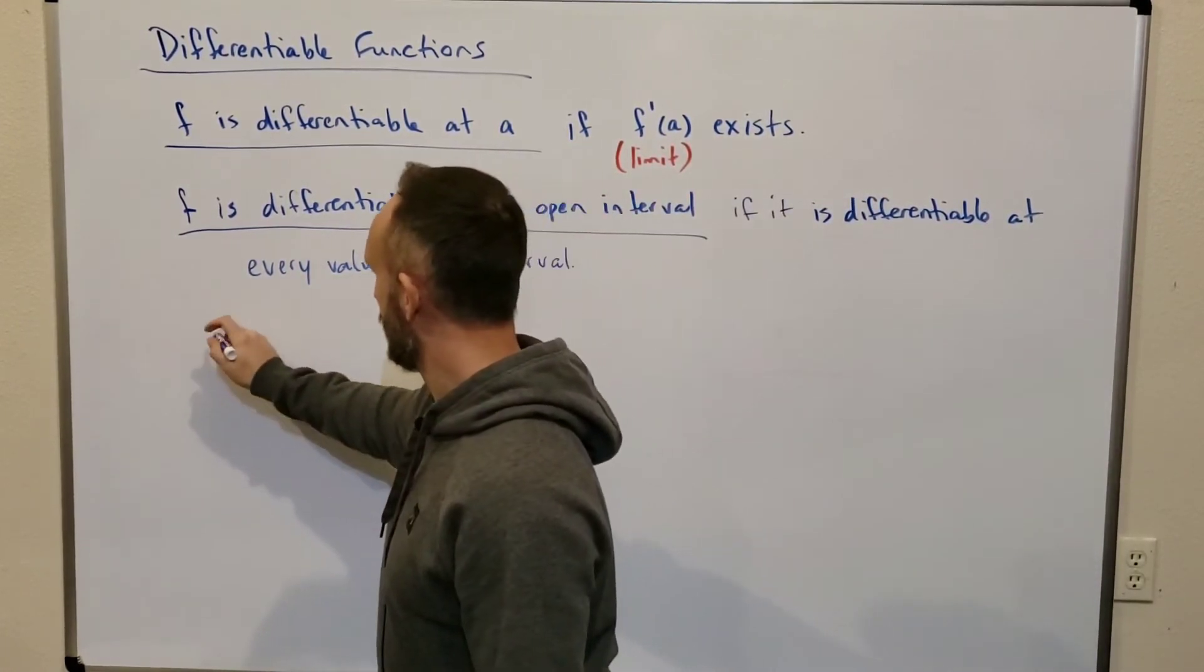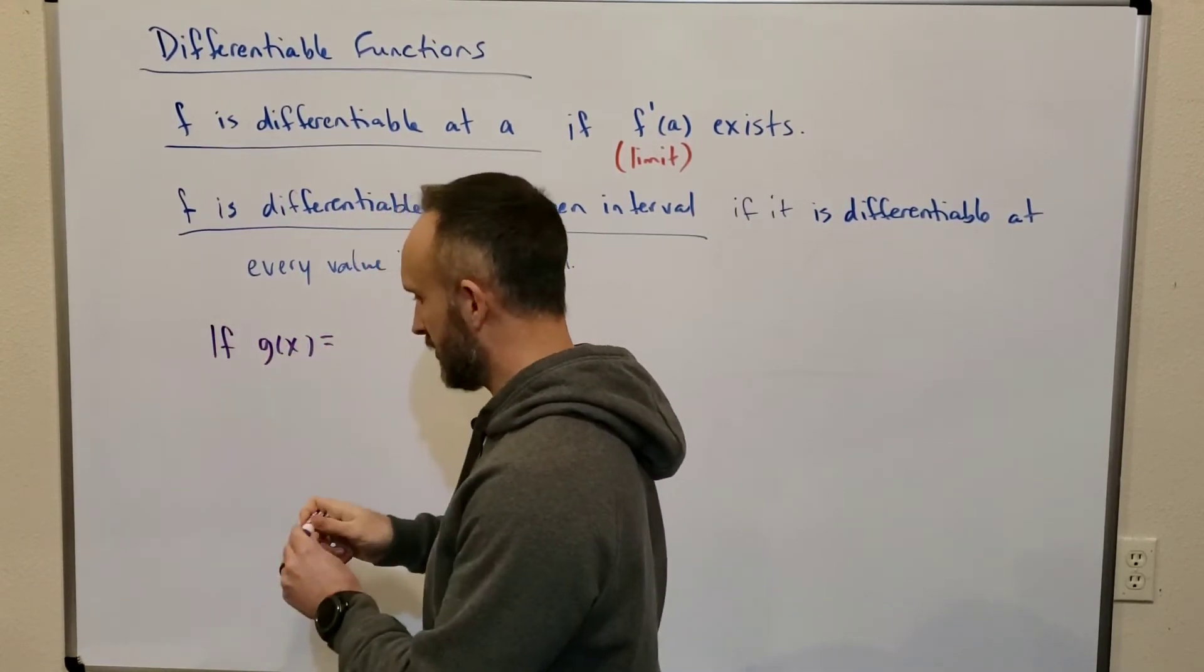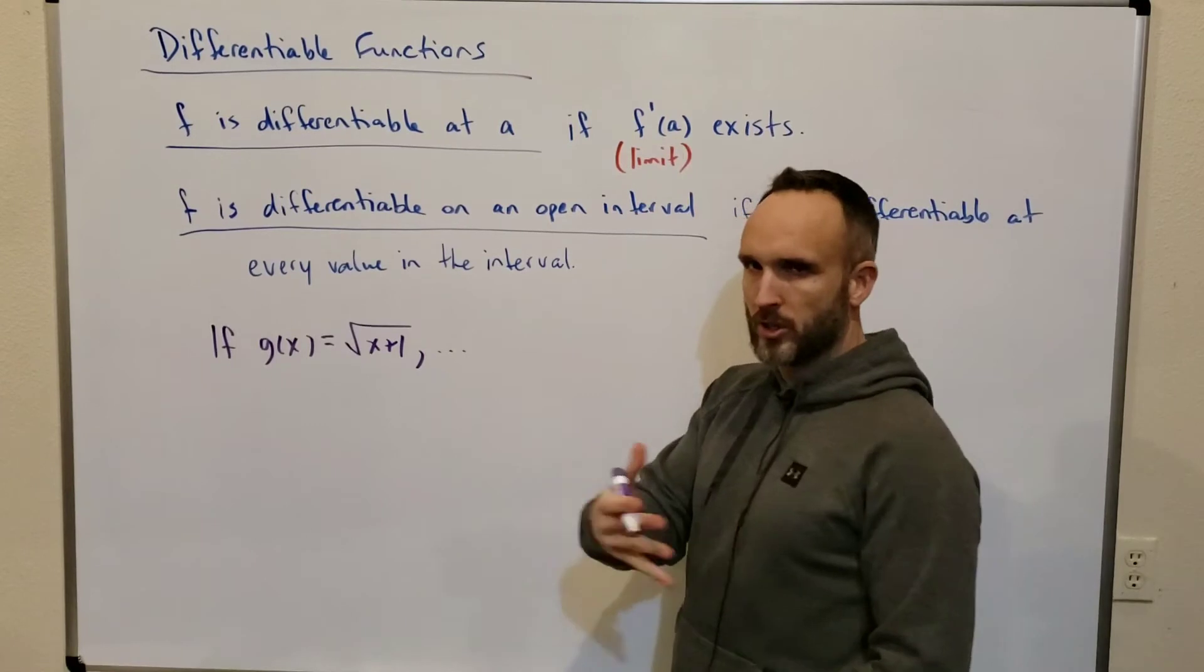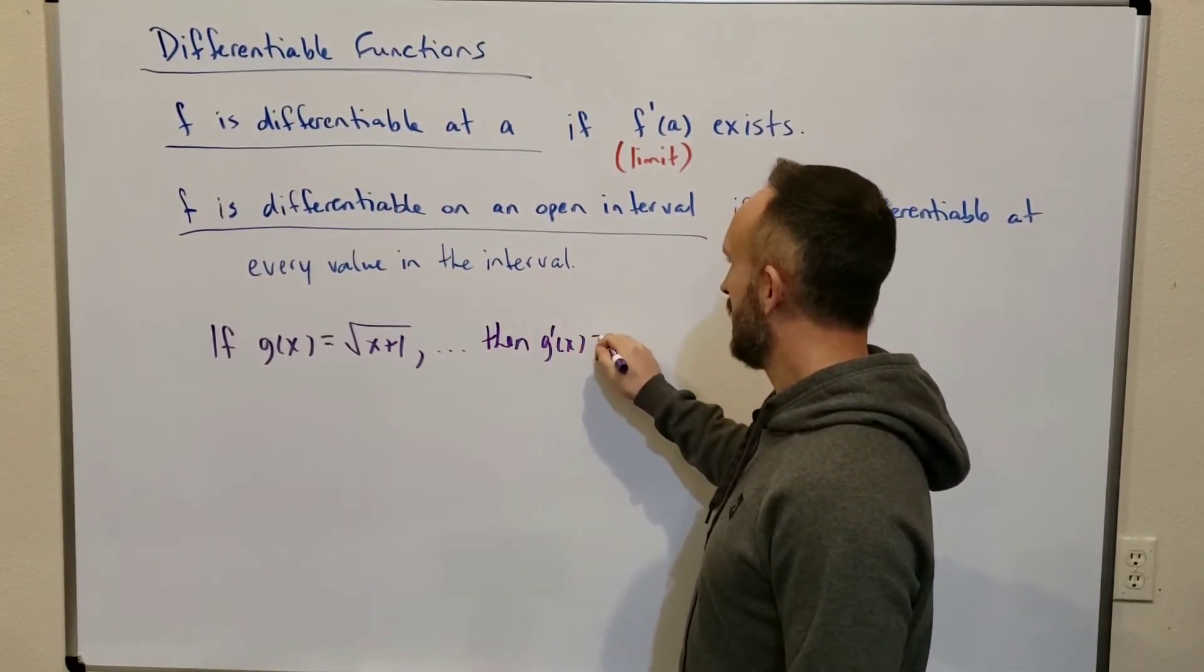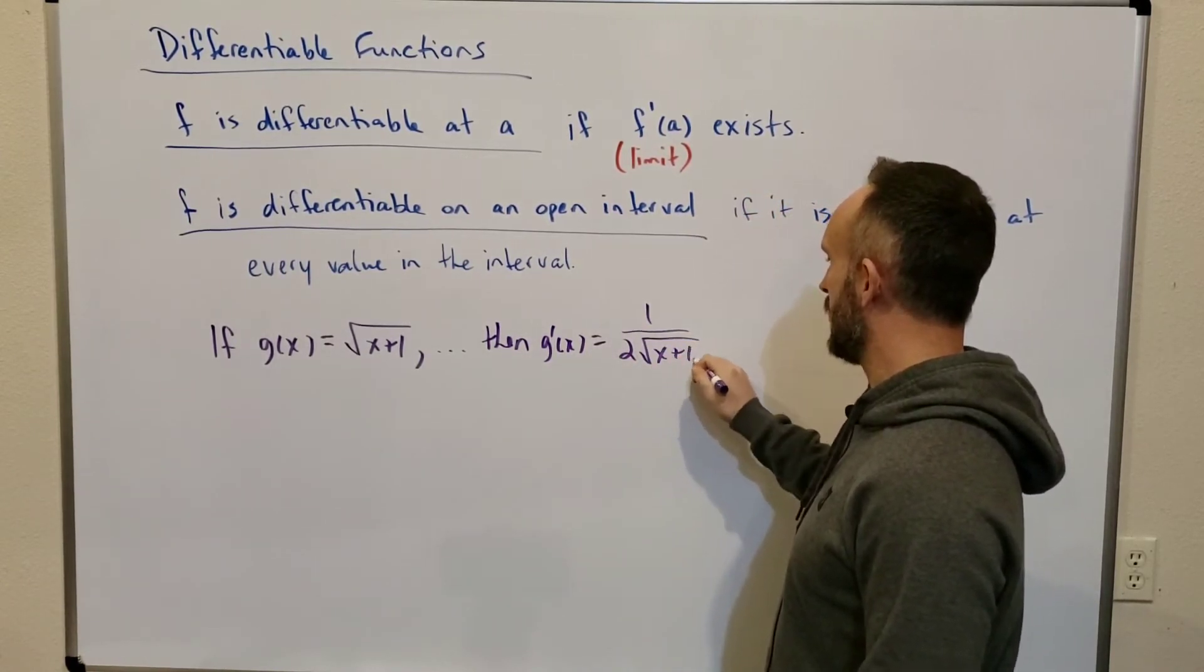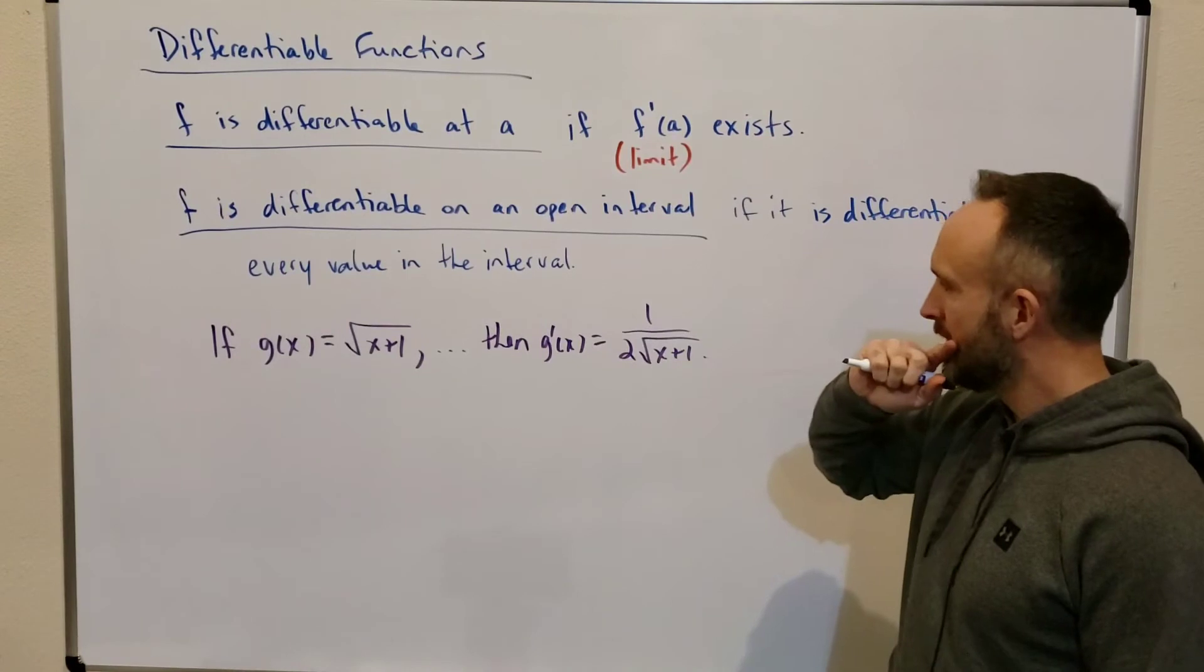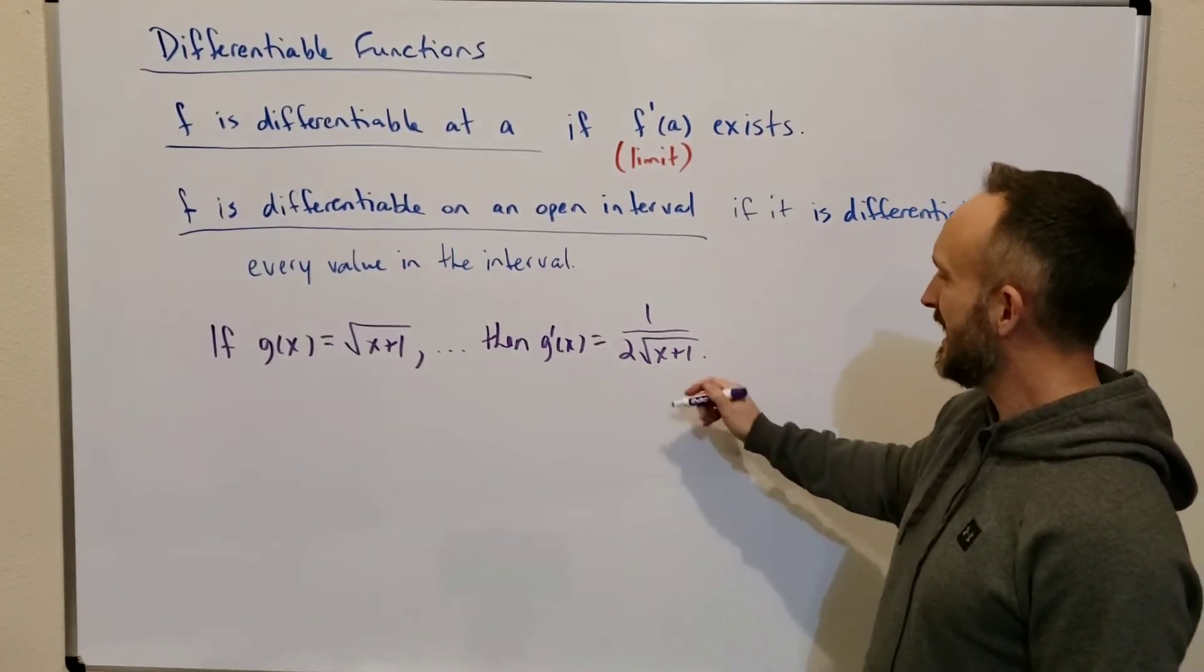Let's suppose g of x equals the square root of x plus 1. Again, through some work, you could find its derivative and you could say that g prime of x equals 1 over 2 times the square root of x plus 1. This video is not about how to calculate that. It's just about discussing the differentiability of functions. Well, this function, the g prime of x function, exists.